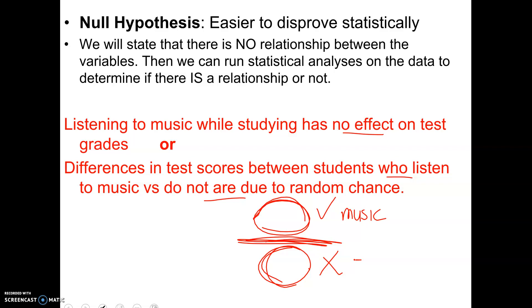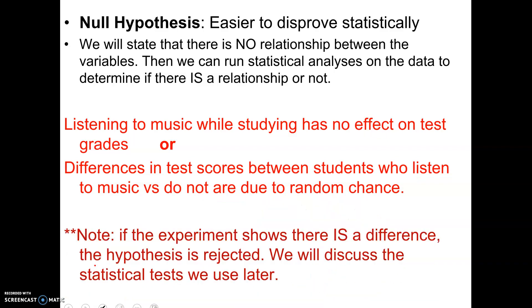This gives us a concrete difference to work with. We state we expect no difference, and then if there is a statistically significant difference, we reject our null hypothesis. That may seem weird because you're used to wanting to accept your hypothesis, but for a null, you're kind of hoping to reject it — because if you reject it, it means there was a real difference, and those who listened to music scored statistically better. If not, we say the two groups were basically the same and any differences were due to random chance.